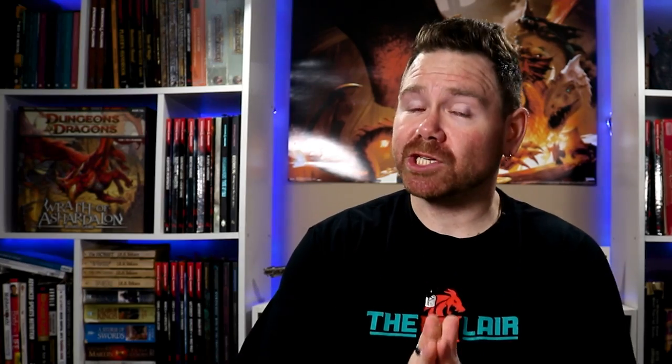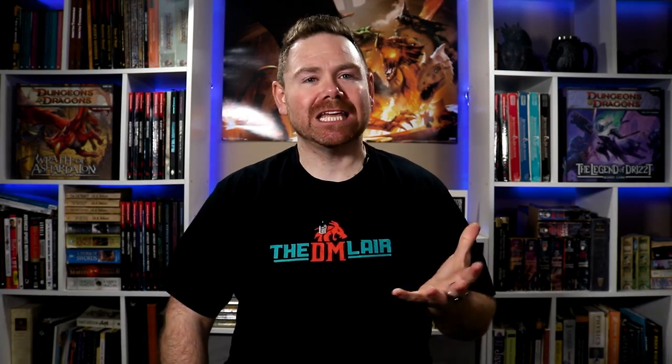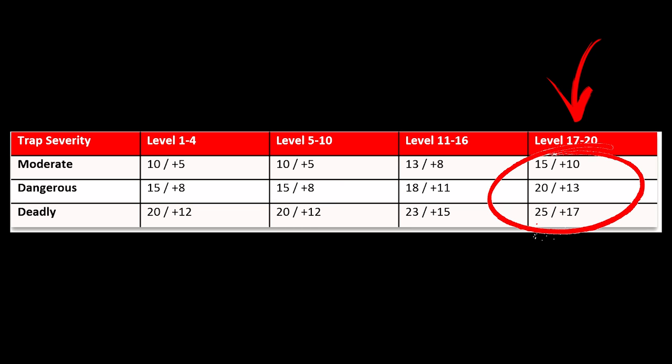The one thing not well represented in these charts is how saving throws and difficulty classes for ability checks should scale with level. For instance, if I create a moderate severity trap for my level 20 party but use the saving throw DC of 10 suggested in the charts, it would be an absolute joke — very few characters would ever come close to failing a DC 10 saving throw at higher levels. My suggestion is to bump up the saving throw DCs, attack bonuses, and spell check DCs of traps based on the level the trap is designed for. You can see here the modified chart that I use, and I feel this works better for traps at higher levels. For levels 11 through 16, I would increase the saving throw DC, attack bonuses, and skill check DCs by three. Then for levels 17 through 20, I would increase them all by another two points.